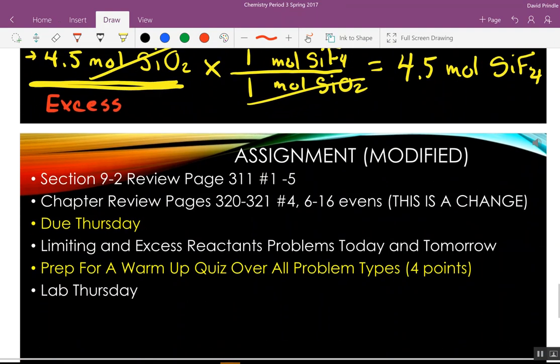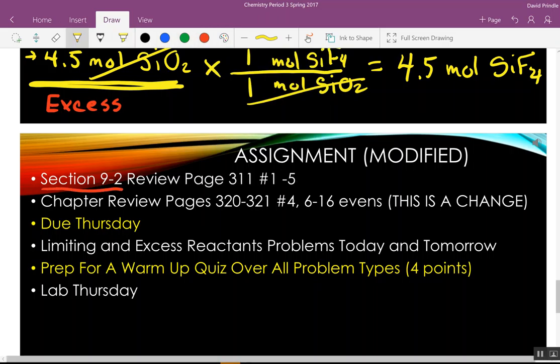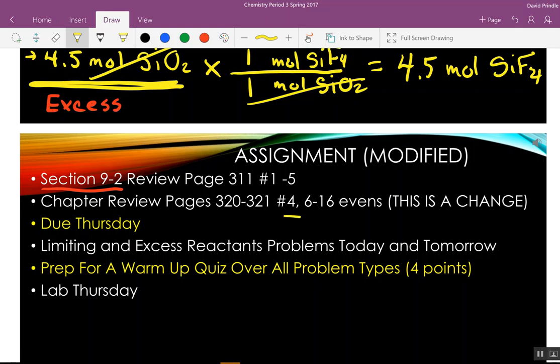Now, I left it on the copier, but I modified the assignment a little bit that you had last week. Still do the section review, 9-2. You can lighten up the chapter review. Just do the even, 6-16. If you did it already, don't worry about it. You just got extra practice. I'm going to make this due Thursday. We'll have a question and answer period tomorrow. And I'm going to give you some limiting reactant problems that I have over on the copier today, and you'll have the rest of the class to work on them. And then there'll be a short quiz tomorrow again at the start of class.